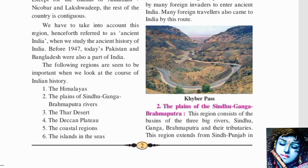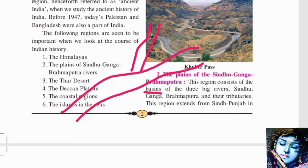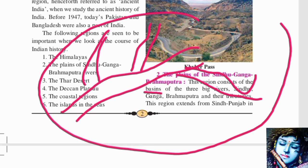Now we will see the plains of Sindhu, Ganga and Brahmaputra. These are also called the North Indian Plains, covering the area of Delhi, Uttarakhand, and Bihar. This region consists of the basins of three big rivers: Sindhu, Ganga, and Brahmaputra. A 'basin' refers to the entire area covered by a river including its tributaries.